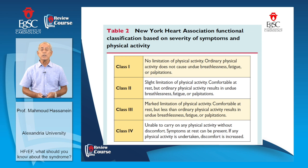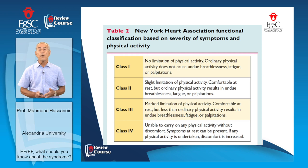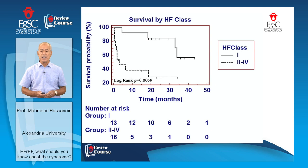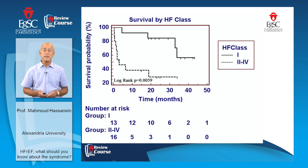The New York Heart Association functional classification is based on severity of symptoms and physical activities. Class 1 is the mildest form — there is no limitation of physical activity, and ordinary physical activity does not cause undue breathlessness, fatigue, or palpitations. In class 4, the patient is unable to carry on any physical activity without discomfort, and symptoms can be present at rest. This classification gives a good idea about the severity of the illness and prognosis. Patients in NYHA class 1 have a much better survival than those in NYHA class 2 to 4.